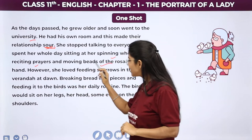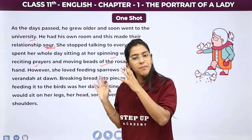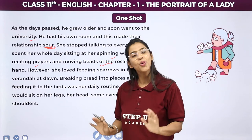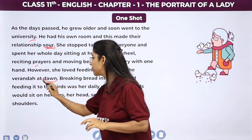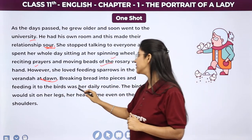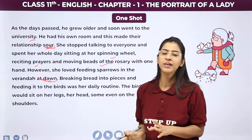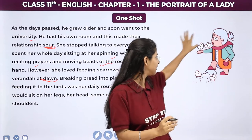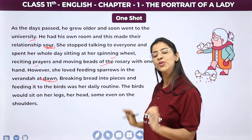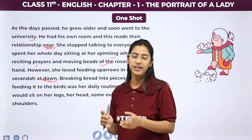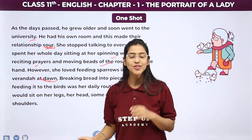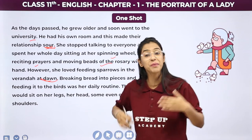However, she loved feeding sparrows in the veranda at dawn time. In sab ke baavujud bhi, unko ek chiz thi jis mein unko bahut maza aata tha — that was feeding the sparrows. Breaking bread into pieces and feeding the birds was her daily routine. Aur ye unka daily routine ban gaya ki sham ke samayi sparrows wahan ek ikathe aa jaati thi. Wo har sham bread crumbs lekar wahan unko feed karti thi. Ye unka half hour ka time tha — ye unka best period rehta tha puri day ka.